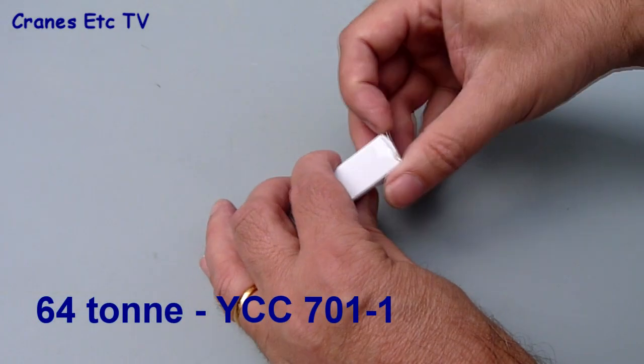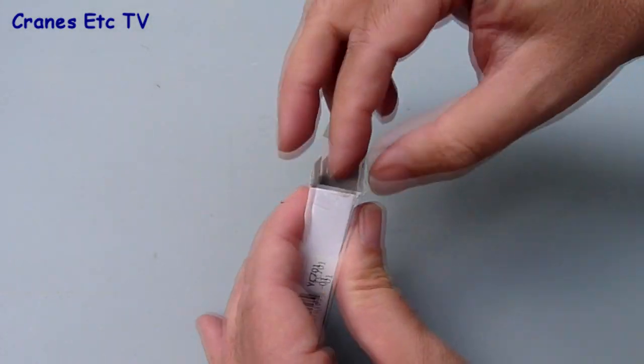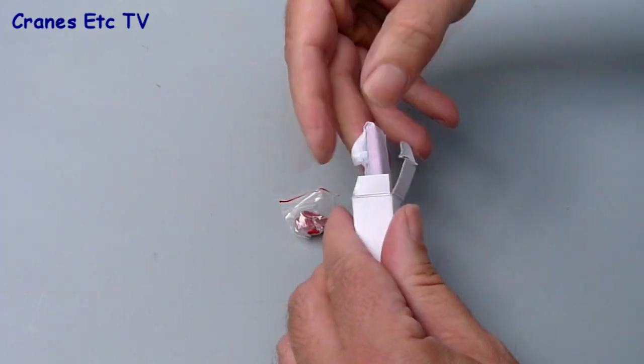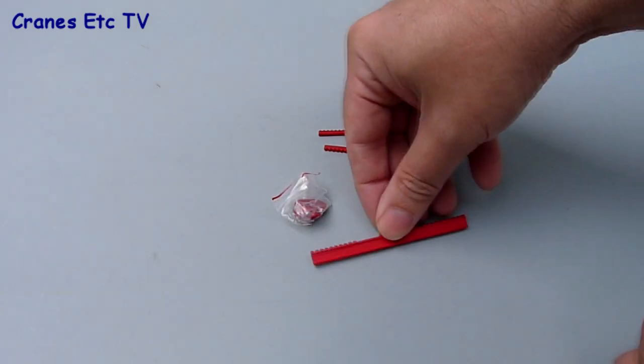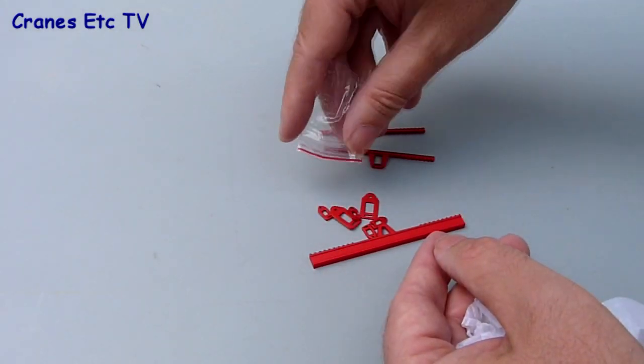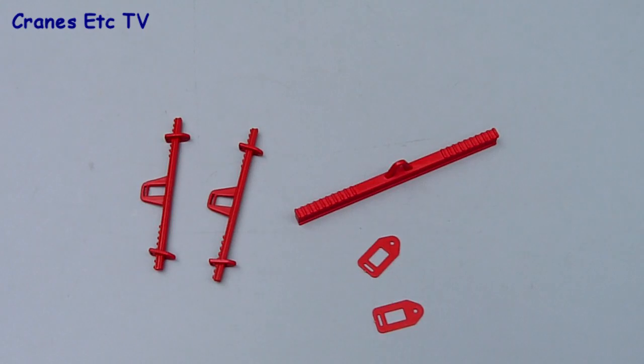On to the final set of lifting beams, this is the 64 ton fully adjustable set and it's different because it comes in a box. There's a small bag of parts with a couple of small beams, one main beam, and some brackets.